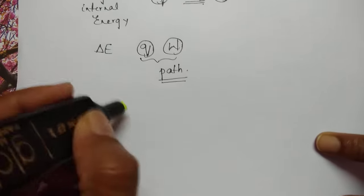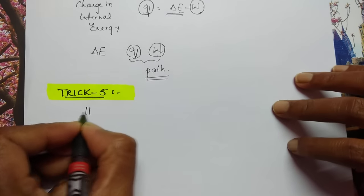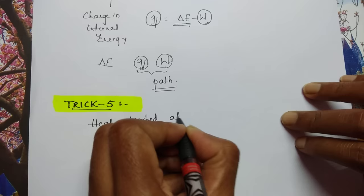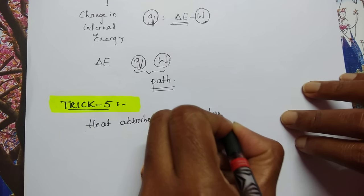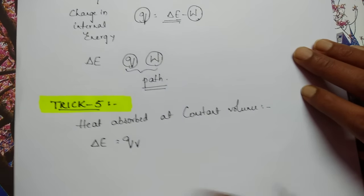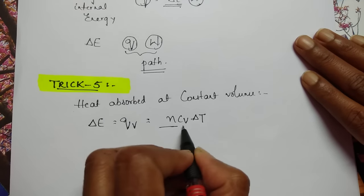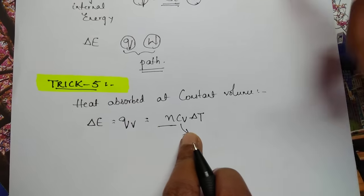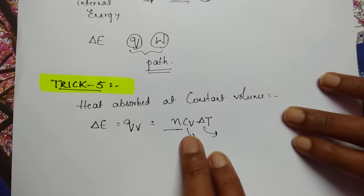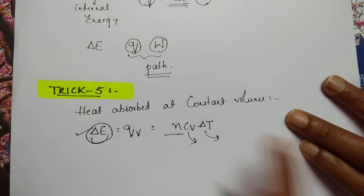Let us see trick number 5. Heat absorbed at constant volume: QV = ΔE = nCvΔT. The number of moles, heat capacity at constant volume, and change in temperature (final minus initial) will all be given in the question. Substitute and you can calculate the internal energy change ΔE.